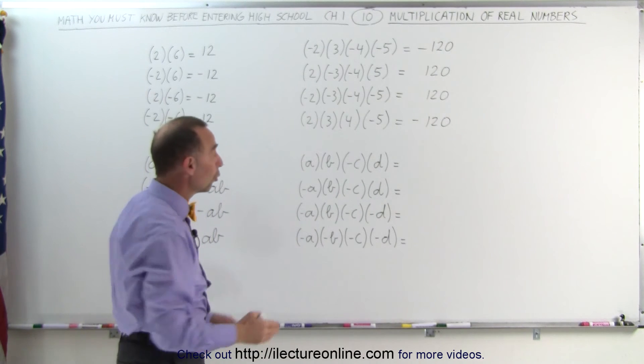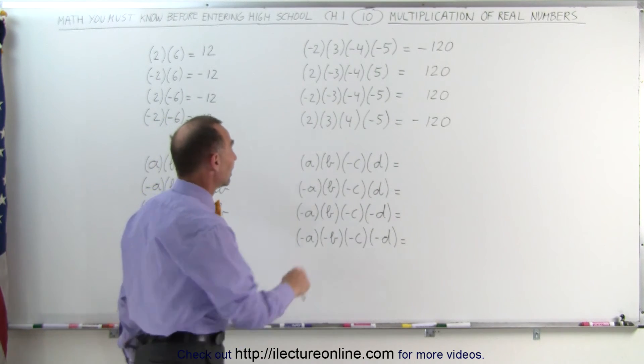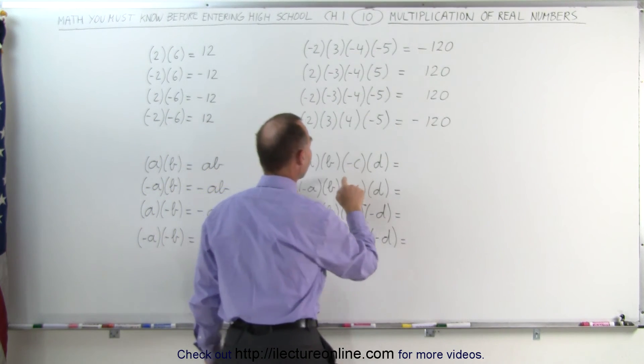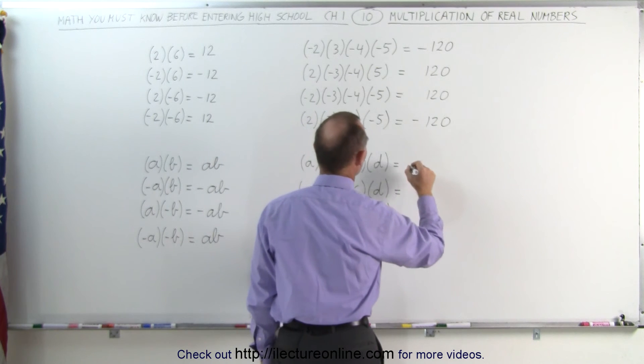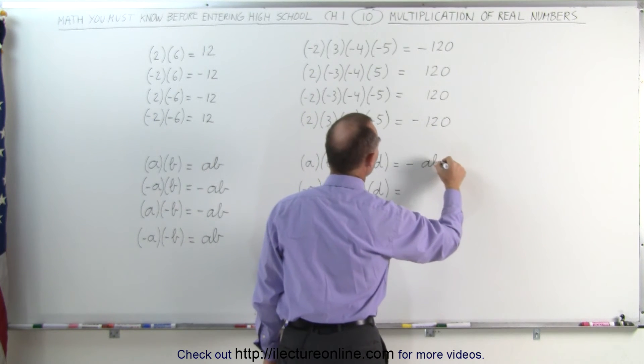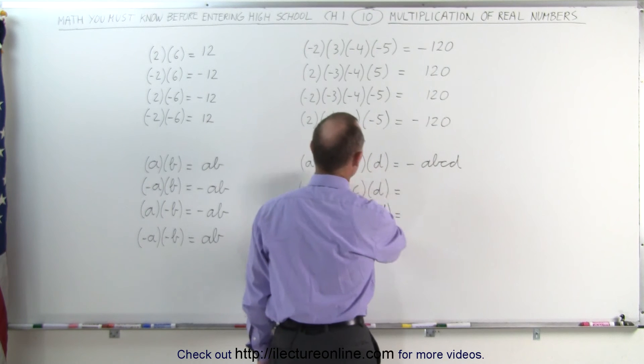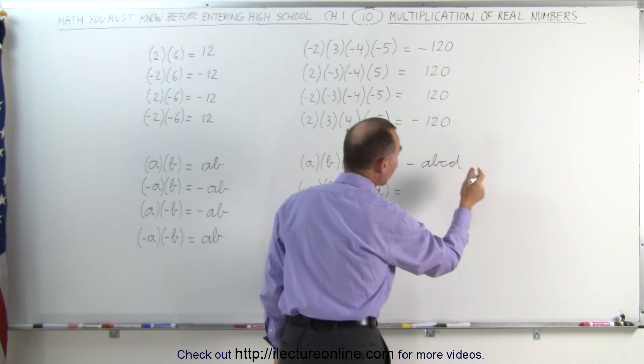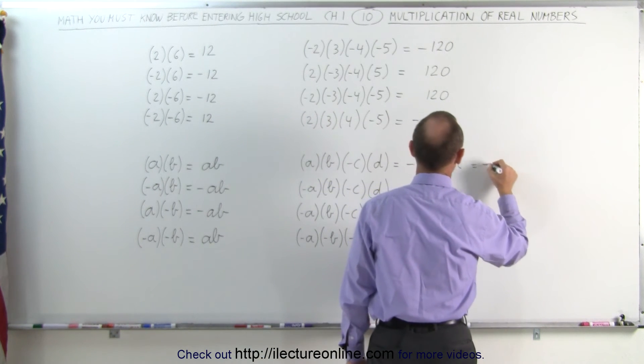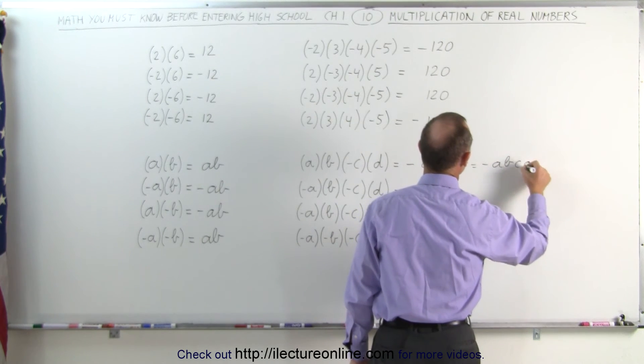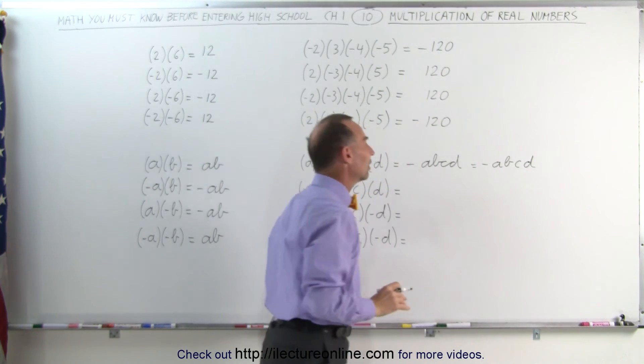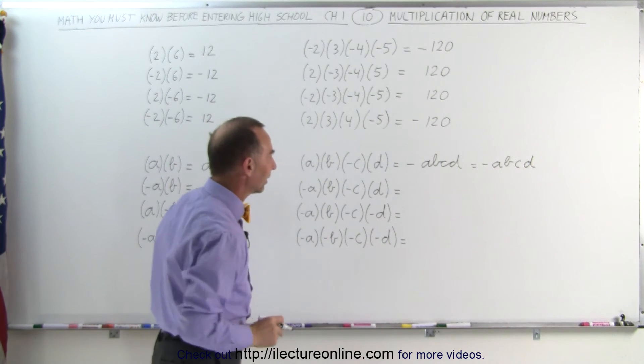It doesn't matter if they're numbers or letters representing numbers. Here notice there's only one negative sign. They're all multiplied together. This becomes minus abcd. Notice when you multiply them together, you can write them all together, or you could write it like this. This is equal to minus abcd. It doesn't really matter. It just shows that they're all multiplied together.